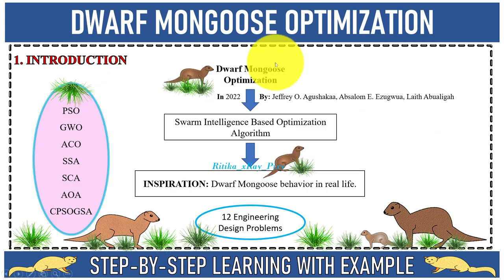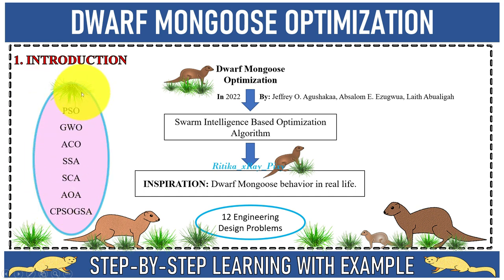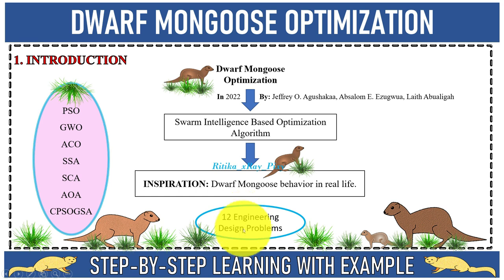The Dwarf Mongoose Optimizer was introduced in 2022 by Jeffrey et al. It is a swarm intelligence-based optimization algorithm used to solve complex optimization problems. It provides efficient results compared to seven different algorithms, and it has also been applied to solve 12 different engineering design problems with excellent results.